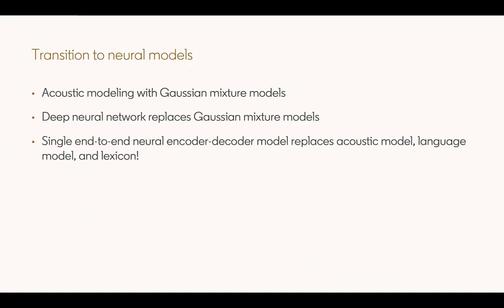The first step in the transition to neural models was replacing the acoustic model. The acoustic model was traditionally modeled by a Gaussian mixture model — a statistical model. The Gaussian mixture model was replaced with a deep neural network, forming the first transition to neural networks, which made a big impact in 2011. In the last two or three years, people have been researching end-to-end encoder-decoder neural network models that completely replace the acoustic model, the lexicon, and the language model with a single neural network model.